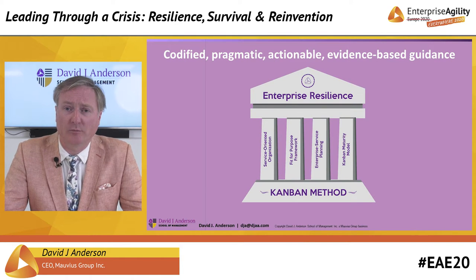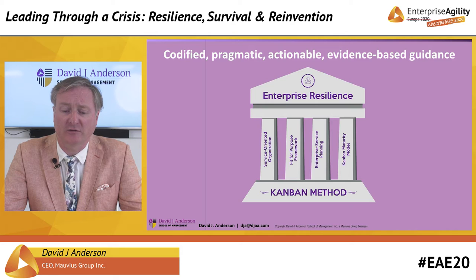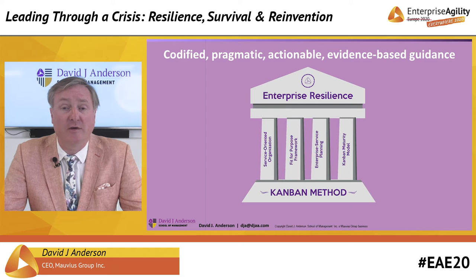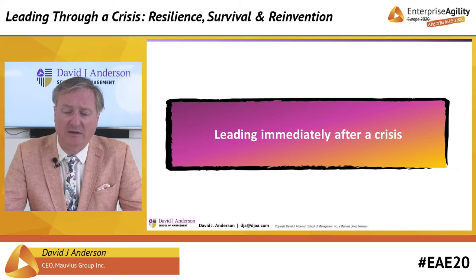We have some codified, pragmatic, actionable and evidence-based guidance to help you with enterprise resilience. The house of resilience, based on the Kanban method with its four pillars: the Kanban maturity model, enterprise services planning, fit for purpose framework, and a service-oriented organization. I'd like to take this keynote speech to explain this outline.